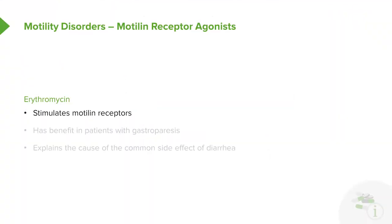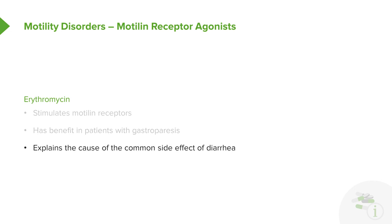Motilin receptor agonists are an interesting group because the prototypical agent is actually an antibiotic — erythromycin. It directly stimulates motilin receptors and has benefits in patients with gastroparesis. This also explains the common side effect of diarrhea. Erythromycin is hard on the GI system, and most patients who take it for an infection complain of diarrhea, because of direct motilin receptor agonist activity.